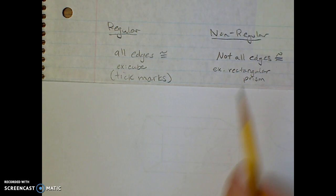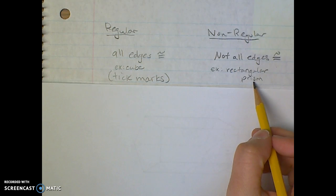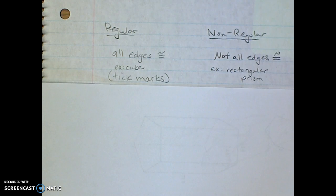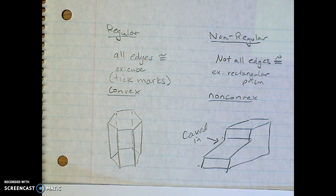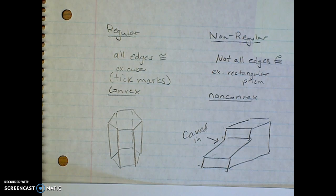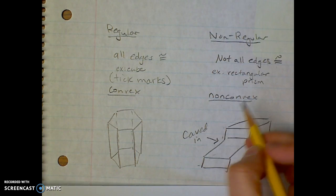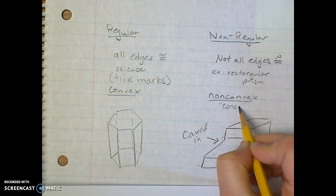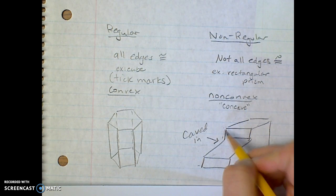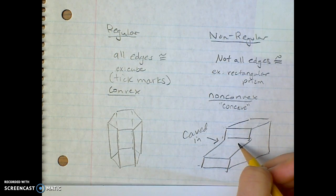Convex versus not convex. If you think back to when we learned about our polygons, we said this is kind of like concave—look for the caved-in part. So look for a shape that looks like it has a chunk out of it or a bite taken out of it, and that would not be convex.